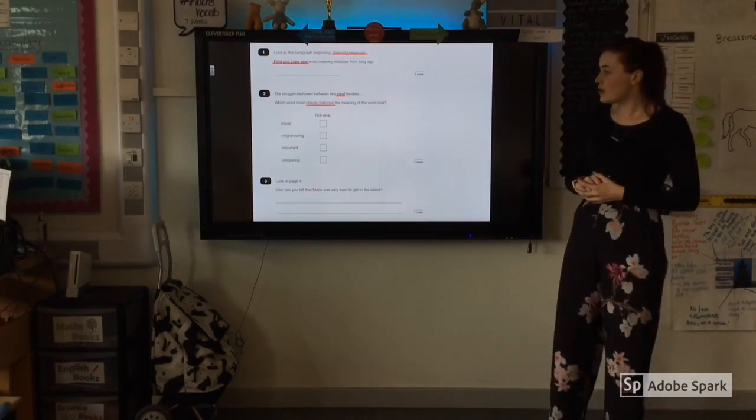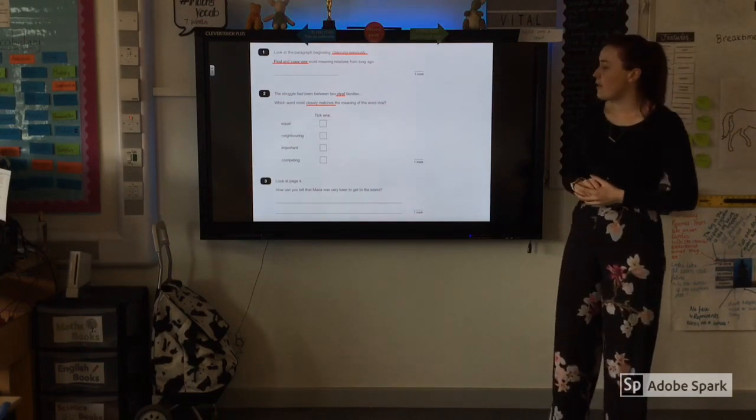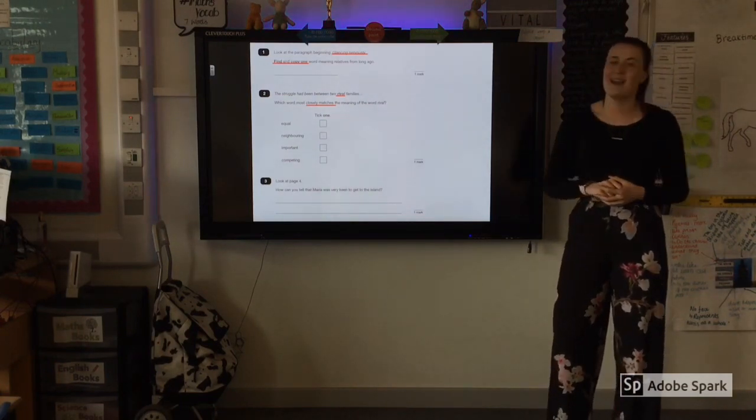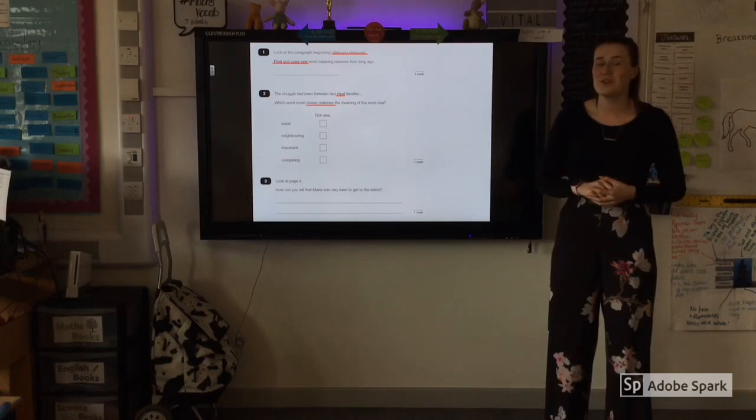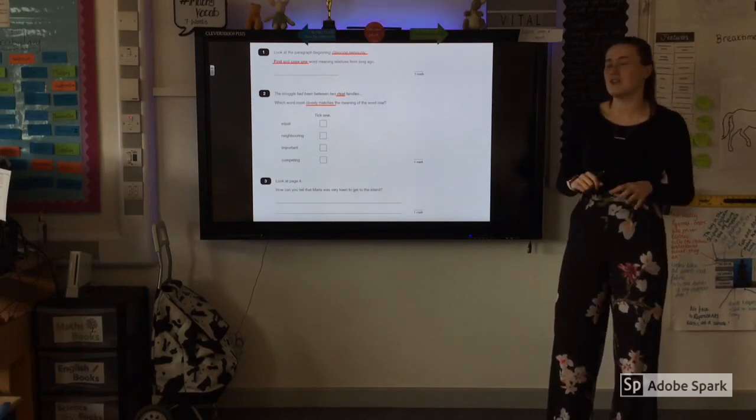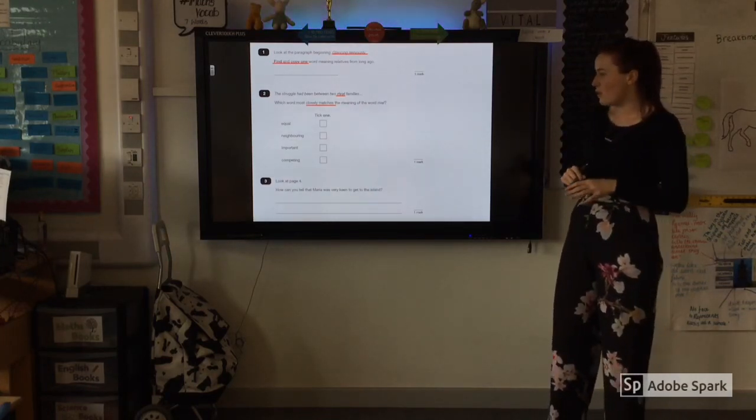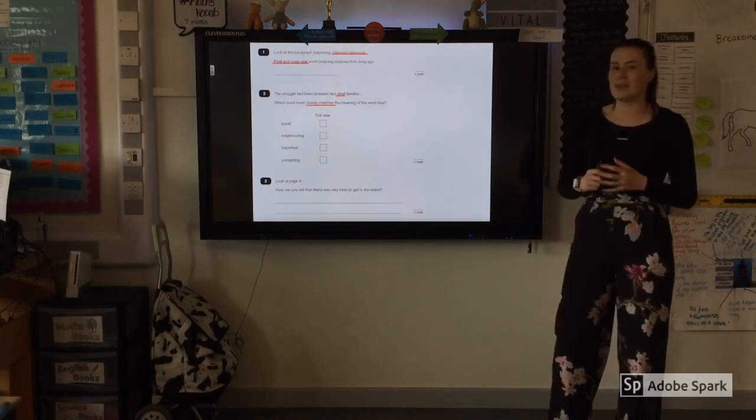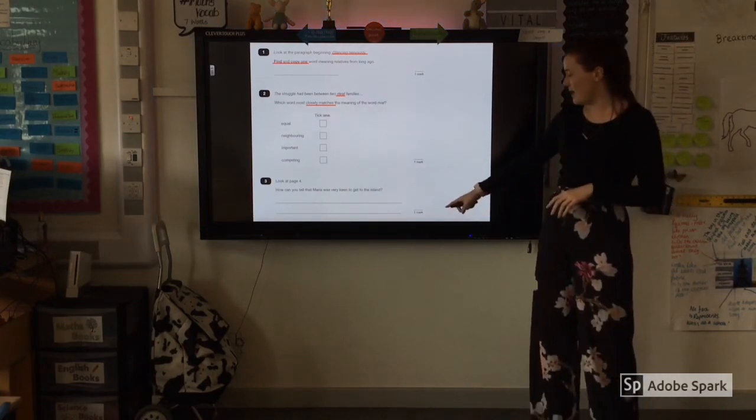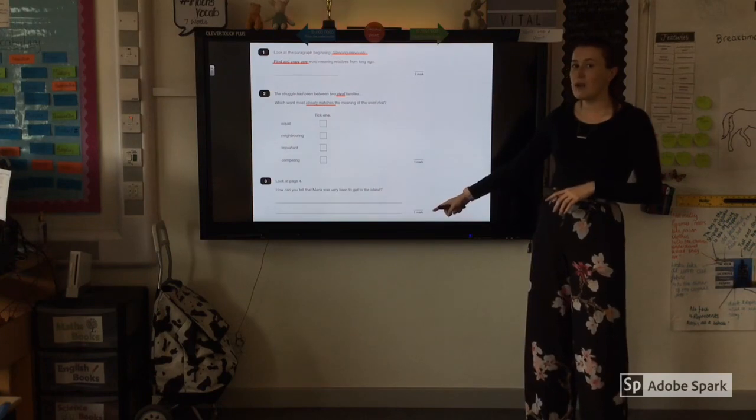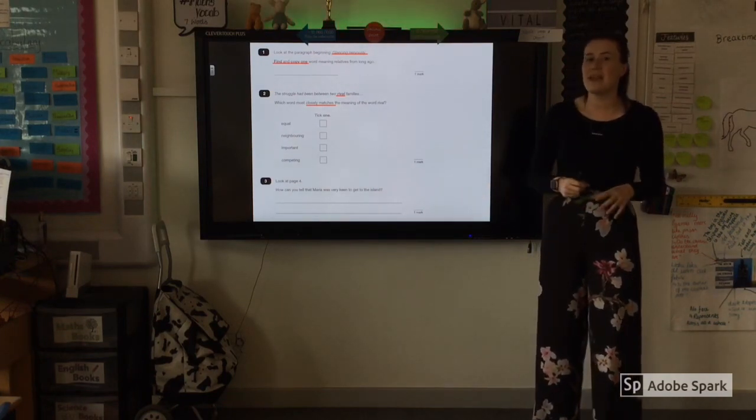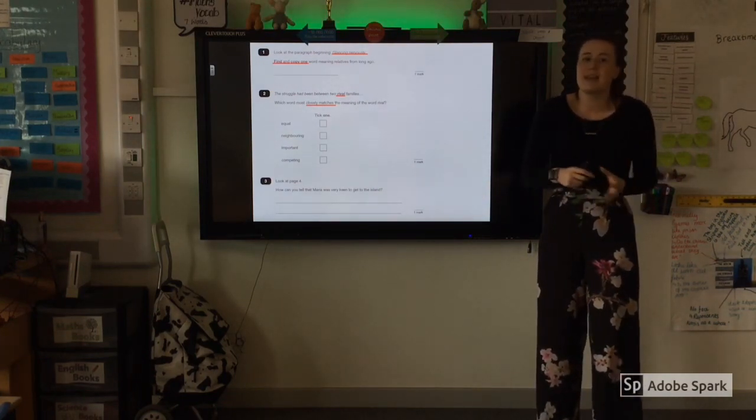And question number three. Look at page four. How can you tell that Maria was very keen to get to the island? Again, a really nice question because it tells you exactly where in the text you need to be looking. Looking at page four. And you're looking for anything that tells you that she was keen to get there. Now for this question, it is only still one mark. So I would be tempted to go back in and literally take from the text the answer.